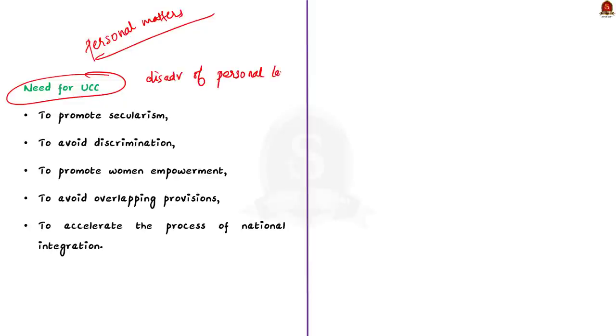We will see the disadvantages of personal laws. First of all, these personal laws are the exact opposite of secularism. So, in order to promote secularism, we need Uniform Civil Code. Secondly, the personal laws are discriminatory. Muslims are governed by Muslim laws and Hindus are governed by Hindu laws. These laws will not be the same. The benefits that are enjoyed by a person in one religion is different from the benefits that are enjoyed by persons in another religion. And this is discrimination. This is why we need Uniform Civil Code.